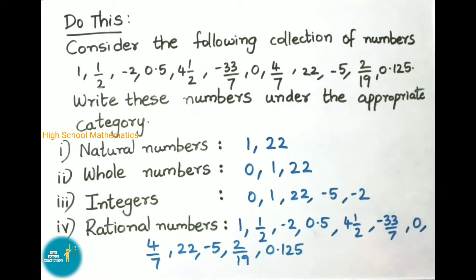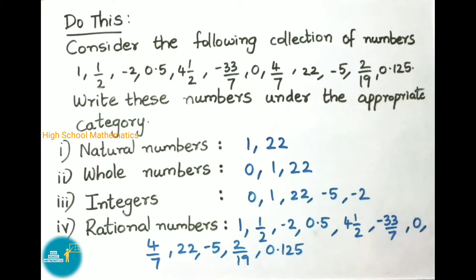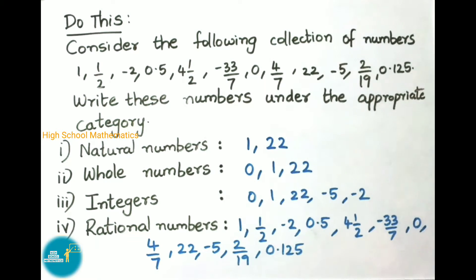Now let us see what are rational numbers from the given collection. All the numbers come under rational numbers. From the previous definition, if numbers are in the P by Q form then they are called rational numbers. For example, 1 can be written as 1/1, so it is a rational number. 1/2 is already a rational number. -2 can be written as -2/1, so it is also a rational number. The decimal number 0.5 can be written as 5/10, so it becomes a rational number in the form P by Q.